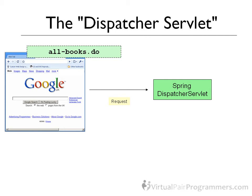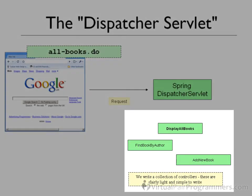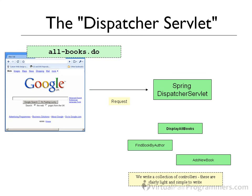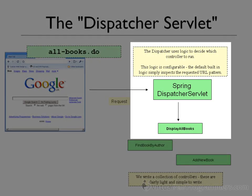I'll show you how to do that in a few moments. Now what the Spring dispatcher servlet will do is use some logic to decide which controller it should run. One of the very flexible things about Spring is this logic can be anything you like — it's completely configurable. But the built-in default logic is really simple. All we do is tell Spring a list of URL patterns together with the corresponding controller that we want to run. So if we have three controllers — displayAllBooks, findBookByAuthor, addNewBook — we'll be able to tell Spring that the allbooks.do URL maps to the displayAllBooks controller.